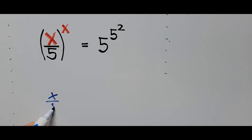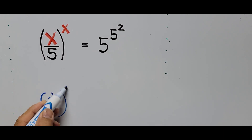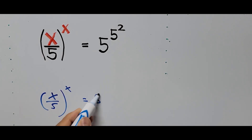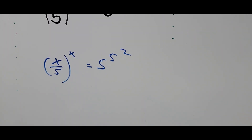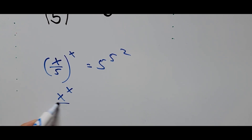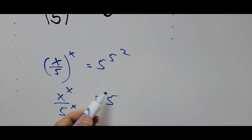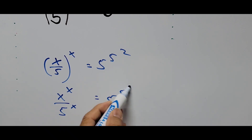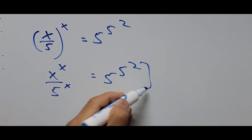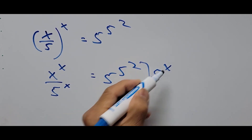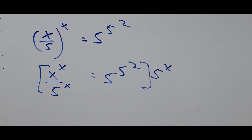To write the equation again: x divided by 5, to the power of x, equals 5 to the power of 5e squared. The left side of the equation can be written as x to the power of x divided by 5 to the power of x, equals 5 to the power of 5 squared. From here we multiply the whole equation by 5 to the power of x to get rid of the denominator.